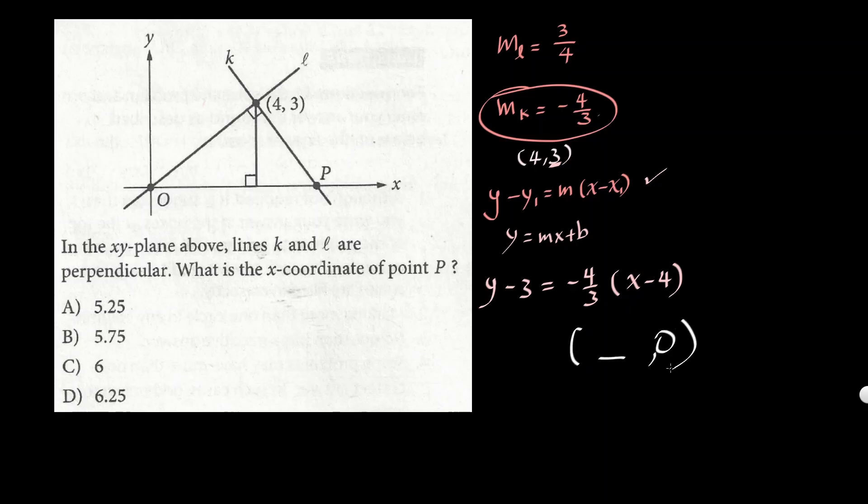In order to find the x-coordinate of P, we put 0 for y because we need to find what x is. So it's going to be -3 (which is 0 - 3) equals -4/3 times (x - 4).